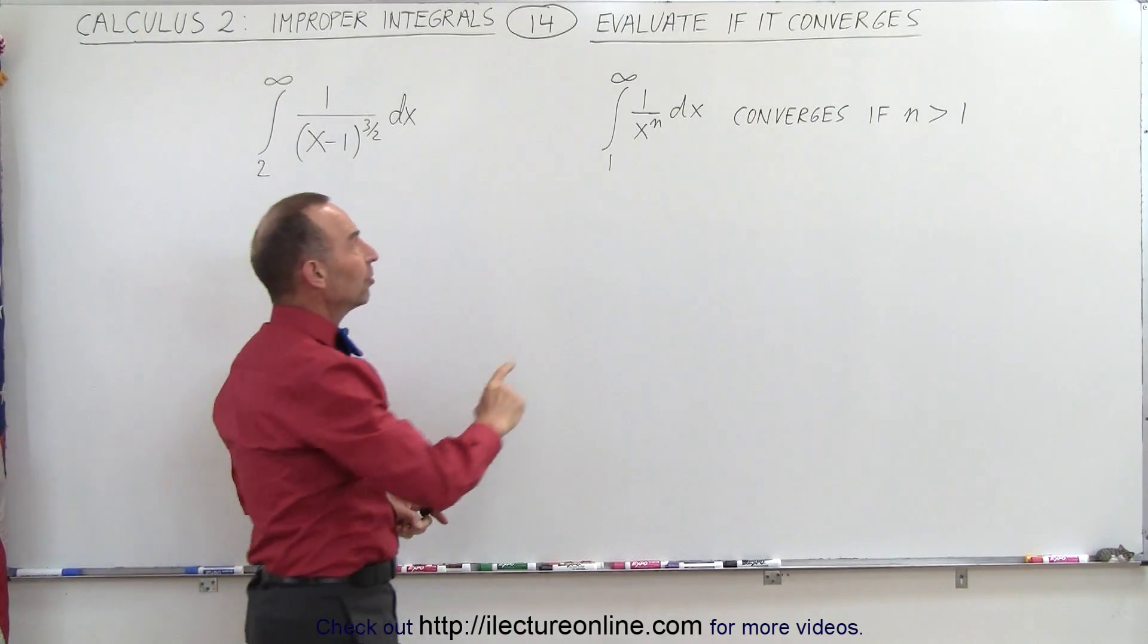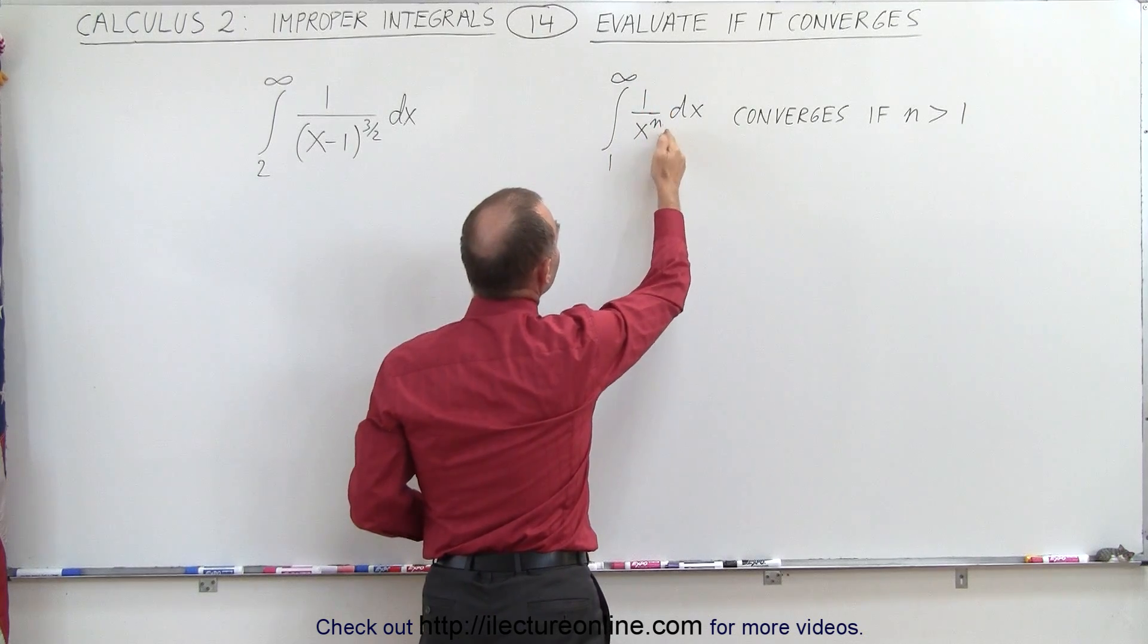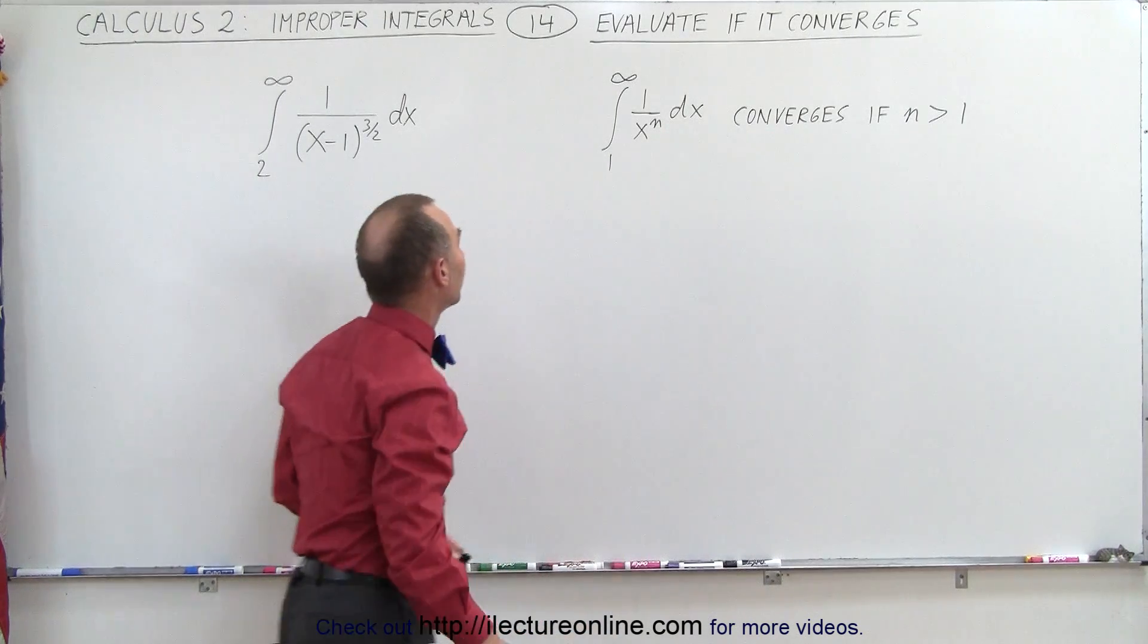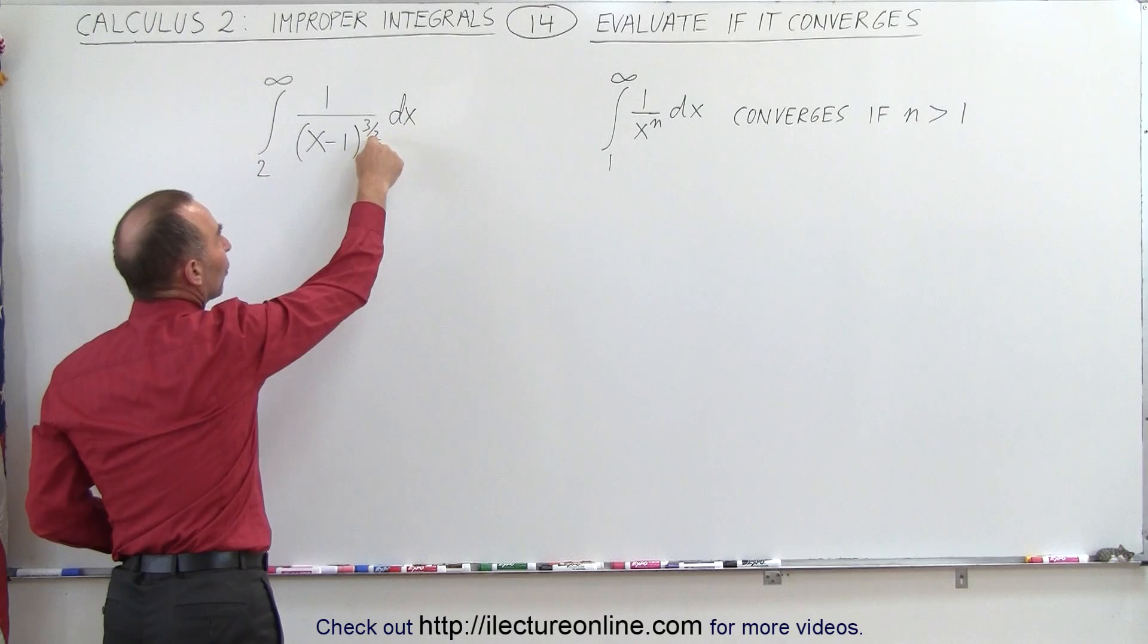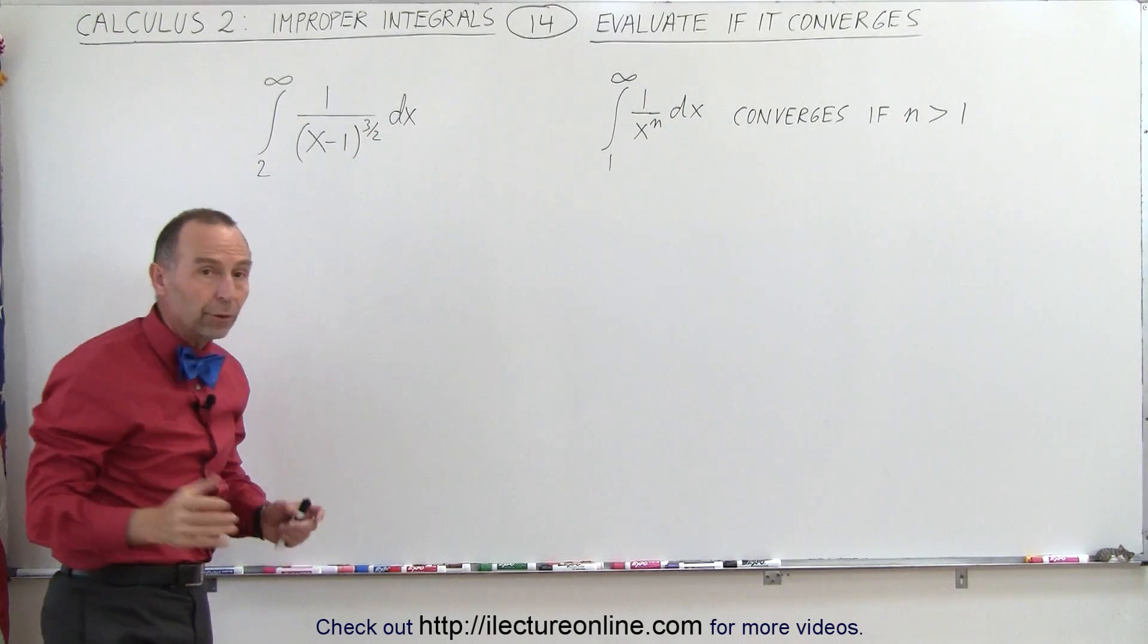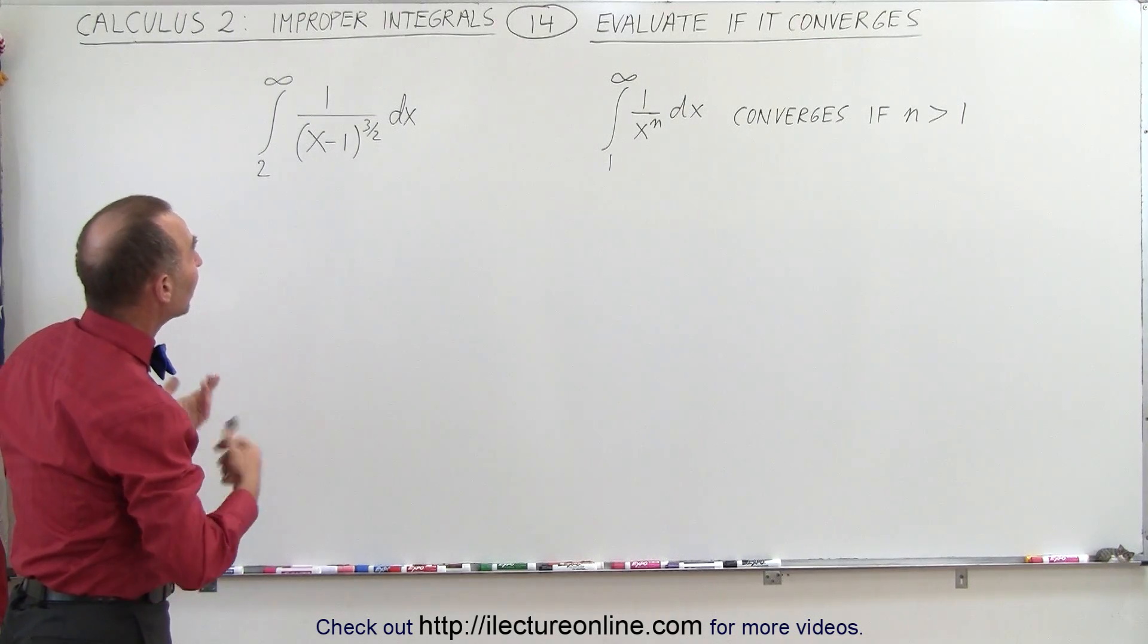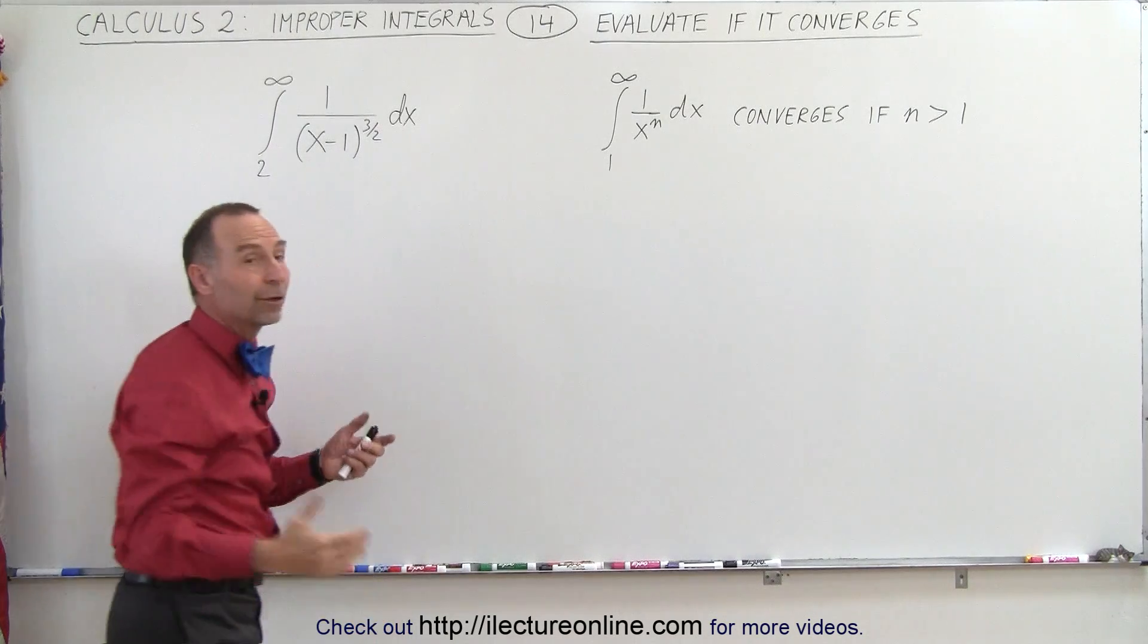Now remember that when we have a function like this, when we integrate from 1 to infinity of 1 over x to the n dx, it will converge if n is greater than 1. So when we take a look at this exponent right here, since this is greater than 1, and the minus 1 here simply moves the function over one unit to the right, we can say that this probably converges under the rules of comparison test.